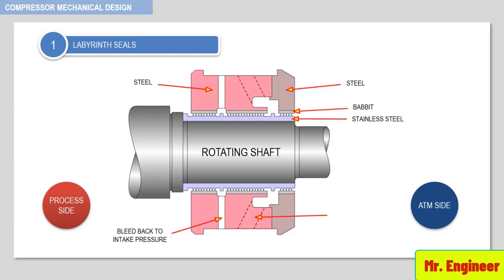Another port can be used to inject another gas at a slightly higher pressure than intake pressure. This prevents the process gas leakage, but results in the injected gas leaking both to atmosphere and intake, as depicted here.